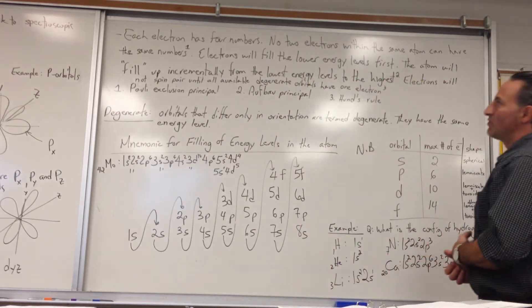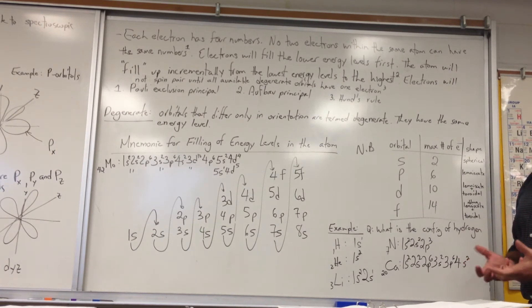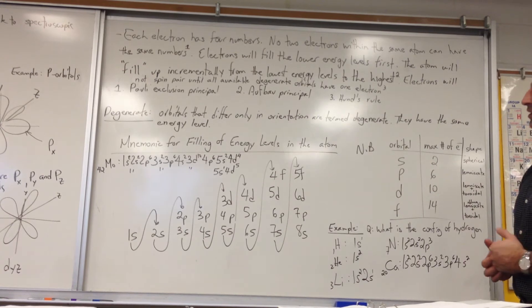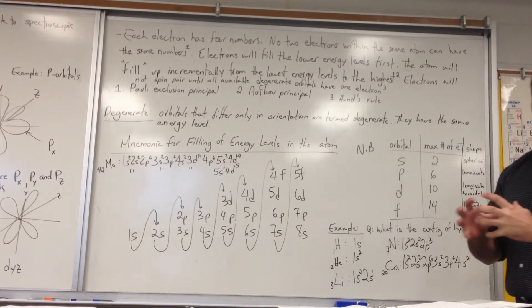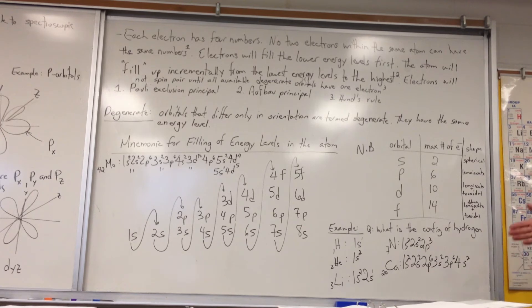Each electron has four numbers. No two electrons within the same atom can have the same numbers. And that idea is called the Pauli Exclusion Principle, meaning that if you have two electrons, think again of our bus analogy.